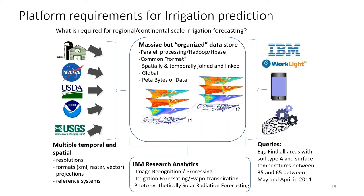Data curation ensures that everything reported in data streams makes physical sense, has the same common format, and that data harmonization happens at that layer. An important aspect not often discussed in the scientific community is how to capture metadata — information about the conditions under which a measurement was acquired and how it was processed. If metadata is captured well, one measurement can be reused across a variety of different scenarios and models by different stakeholders.